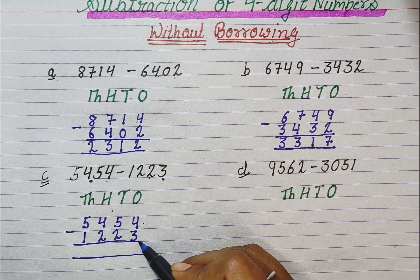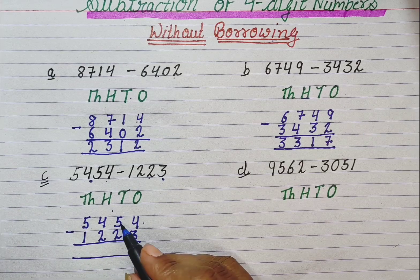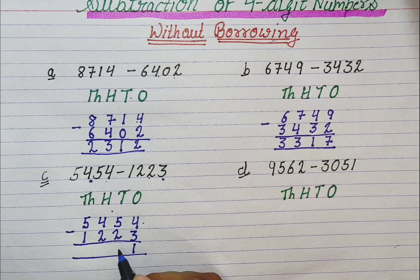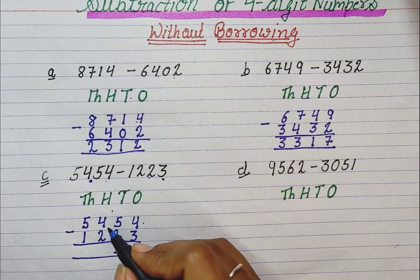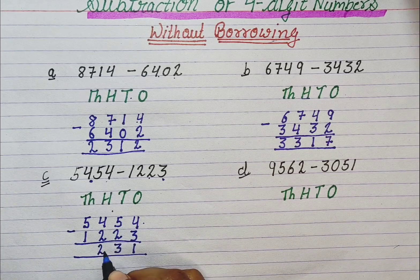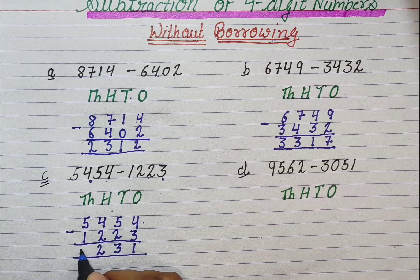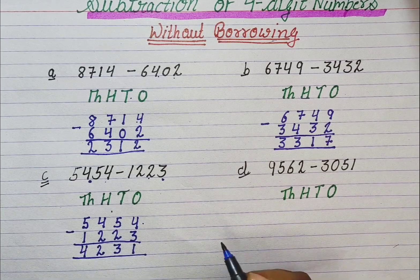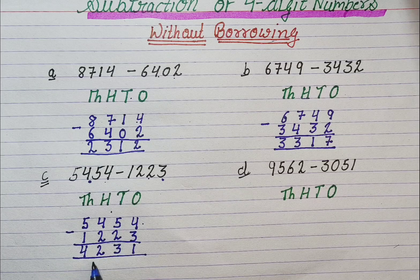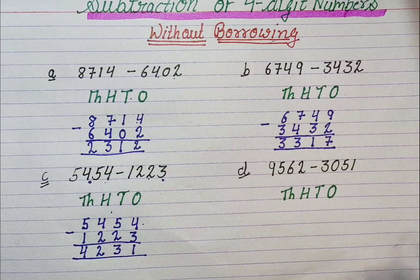Now we subtract them. 4 minus 3 is 1. 5 minus 2 is 3. 4 minus 2 is 2. 5 minus 1 is 4. So the answer is 4231.